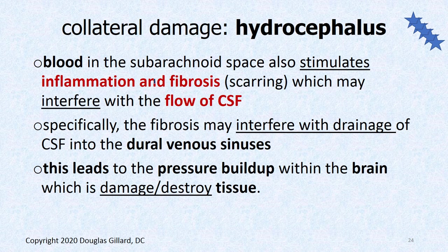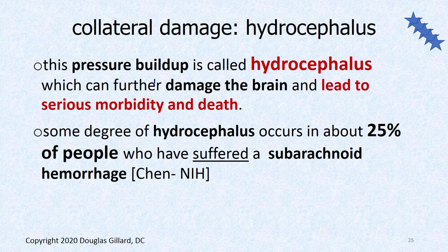Hydrocephalus: because of the arachidonic acid and inflammation, you can get scar tissue buildup within the subarachnoid space, interfering with the flow of cerebrospinal fluid. That scar tissue can act like a beaver dam, since CSF dumps into the superior sagittal sinus. Pressure builds up inside the brain causing hydrocephalus, which can kill somebody. This happens to some degree in about 25% of people who've suffered a berry aneurysm bleed.